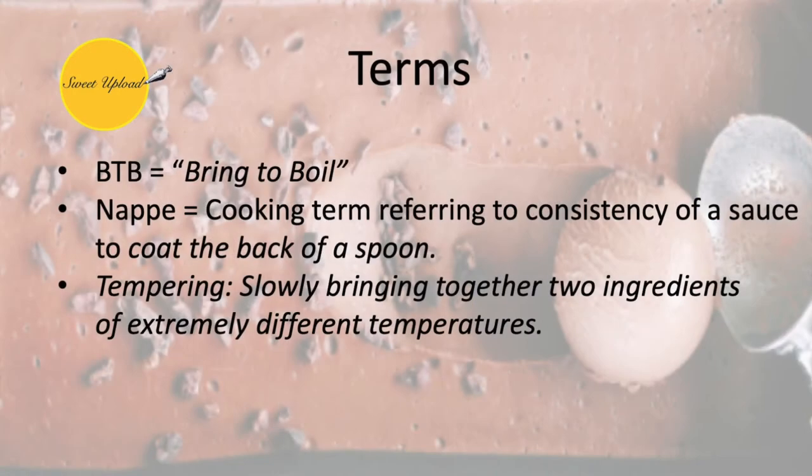If this is the first video you've viewed in the creme anglaise series, these terms may be new to you; if not, these will be familiar already. We have BTB, which means bring to boil; NAP, a French term that refers to a sauce that has the consistency to coat the back of a spoon; and tempering, which refers to slowly bringing together ingredients of extremely different temperatures. You will see this today in the combining of hot dairy with cold egg yolks.